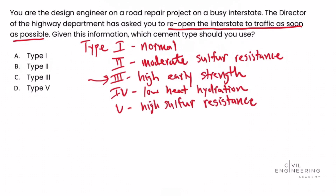Looking at the answer choices, that is answer choice C, Type III cement, and we've successfully solved this problem. I hope that helped you. If you haven't already, check out civilengineeringacademy.com and enroll in one of our civil PE depth or breadth review courses for more practice. We'll see you there.